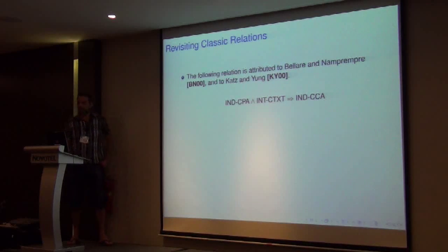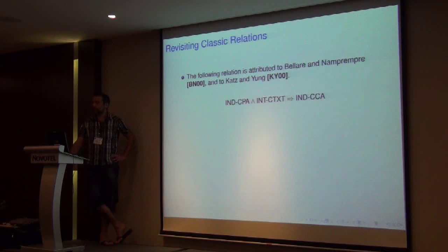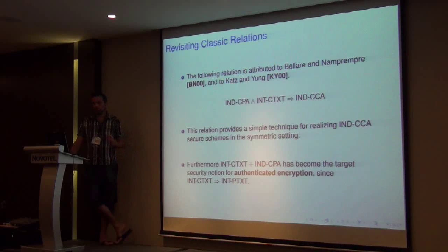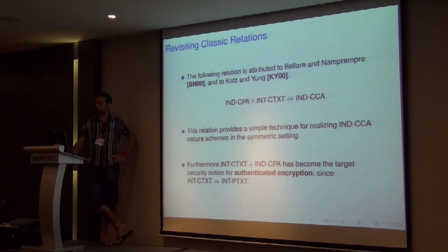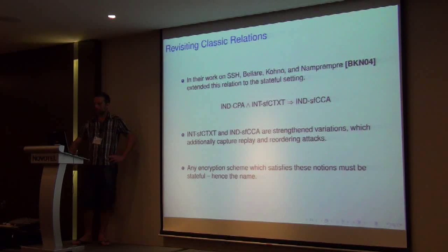Let's start with the following relation proposed by Bellare, Namprempre, and Bernstein, and also by Katz and Yung. This says that if a scheme is NCPA secure and satisfies ciphertext integrity, then the resulting scheme is also NCCA secure. This relation, in its simplicity, provides a very simple way of achieving NCCA security in the symmetric setting. It also turned out to be quite useful because NCPA and ciphertext integrity together guarantee strong confidentiality, which is NCCA, and also message authentication — making NCCA the target security notion for authenticated encryption.